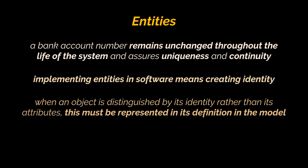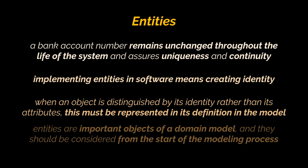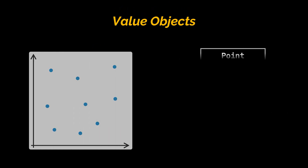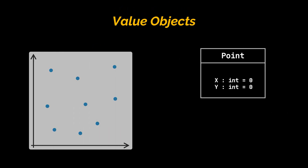Implementing entities in software means creating identity. For a person it can be a combination of attributes; for a bank account, the account number seems to be enough. When an object is distinguished by its identity rather than its attributes, you must represent this in its definition in the model. Keep the class definition simple and focused on life cycle continuity and identity. Entities are important objects of a domain model and should be considered from the beginning of the modeling process.